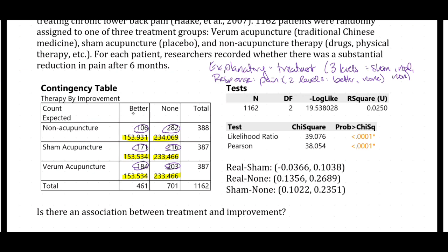For the people who received non-acupuncture therapy, we would have expected — if the two variables were independent — 153.9 of them to have gotten better. Similarly, we would have expected 153.5 people to have gotten better under sham acupuncture if the two variables were independent. The highlighted entries in each cell are what we would have expected under independence, and the circled entries are what we actually observed.